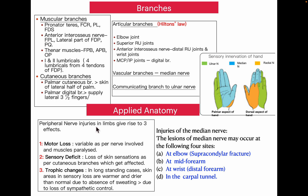In applied anatomy, peripheral nerve injuries produce three types of effects: motor loss (variable depending on muscles paralyzed), sensory loss (as per the cutaneous distribution), and trophic changes — in long-standing cases, the skin area in sensory loss zones is warmer and drier than normal due to absence of sweating, caused by loss of sympathetic control. Injuries of the median nerve can occur at the elbow joint (supracondylar fracture), mid forearm, wrist, and in the carpal tunnel.